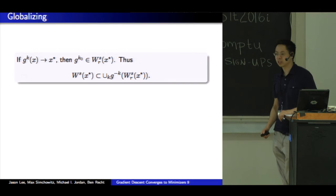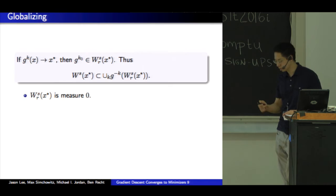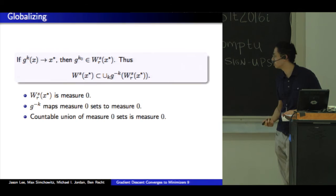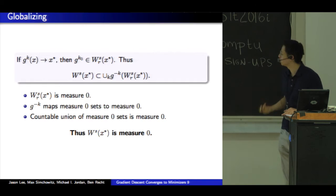So if my dynamical system converges, then by definition it enters the local stable set. Then I can recover the global stable set by running my g backwards. If I eventually enter this set, I apply g minus k to this and union over all k. So that gives me a superset of the global stable set. Each local stable set is measure zero because it's missing at least one dimension. Countable unions of measure zero. Sorry, g minus k preserves measure zero. It's a local diffeomorphism. And countable union of measure zero is measure zero.